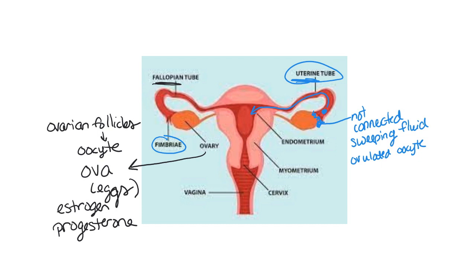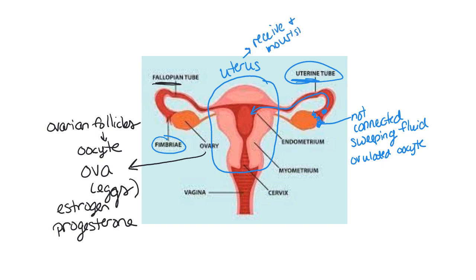The uterus itself is a very muscular organ. Its job basically is to receive and then nourish and help grow a fertilized egg, and then to actually expel the fetus. If the egg is not fertilized, it will not implant into the uterus. So it will receive the fertilized egg, nourish it, help it grow and develop, and then help expel the fetus — which is why you have all this muscle, the myometrium, in the uterus.